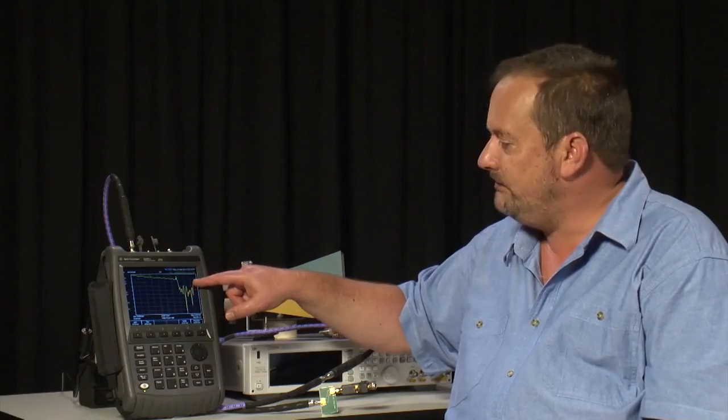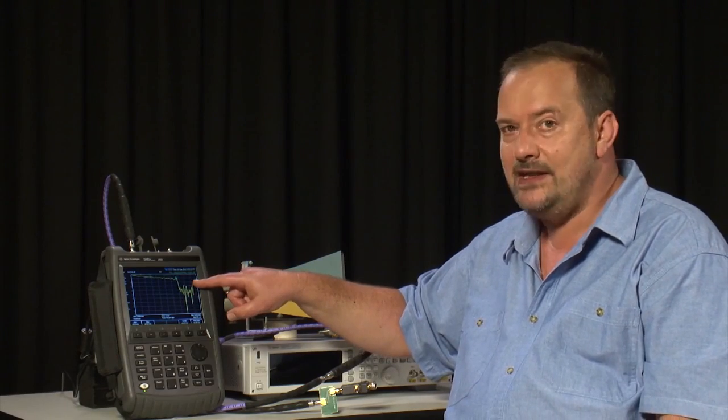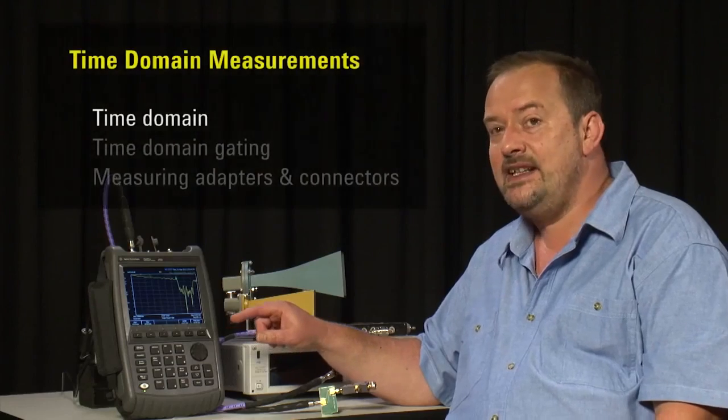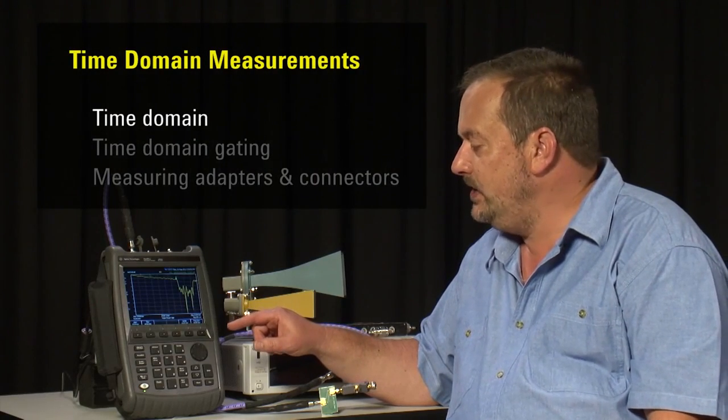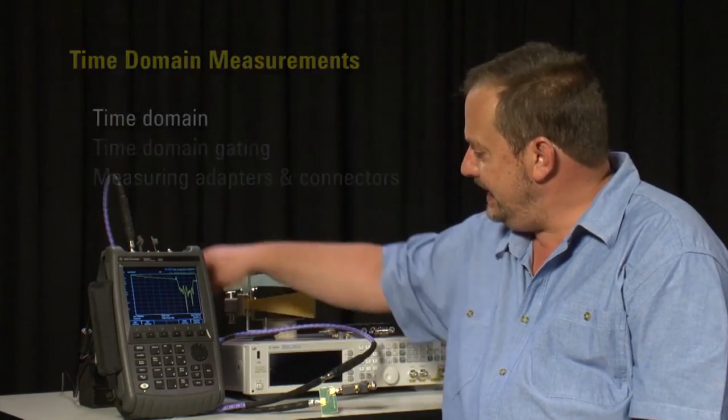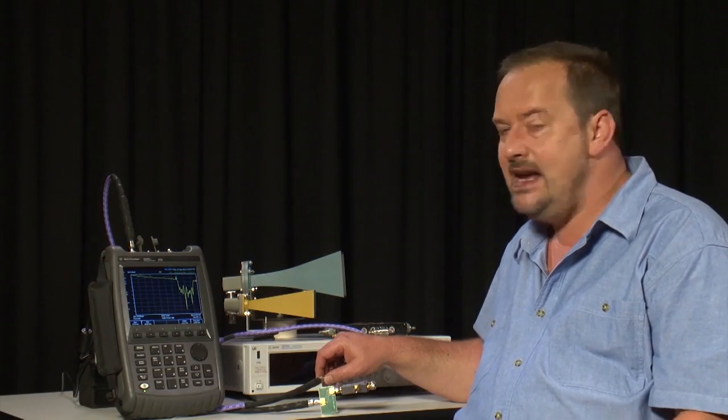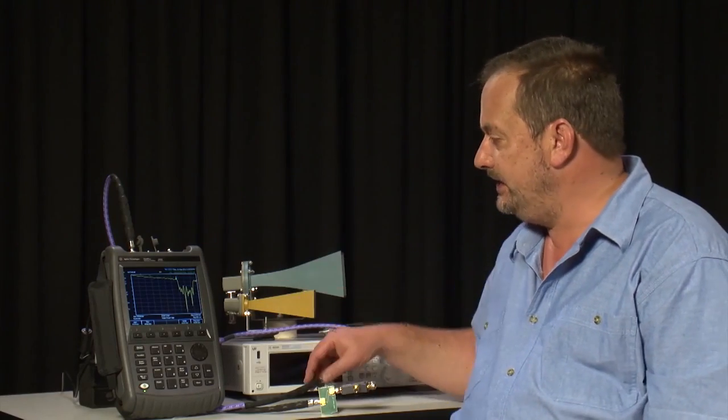This is typically characteristic of a poor match somewhere in the measurement system. And this is where time domain can be incredibly useful to try and identify any point in the measurement system that is not 50 ohms and is providing a reflection to the incoming signal.